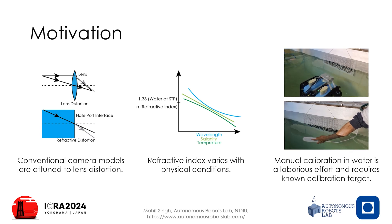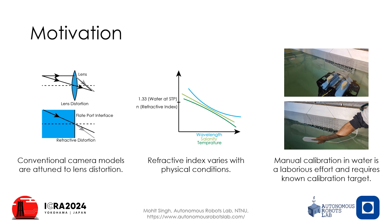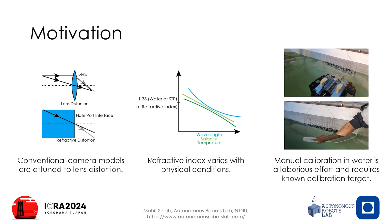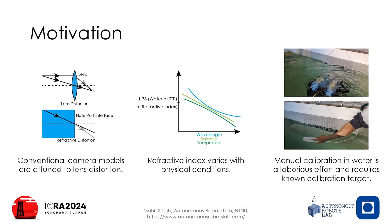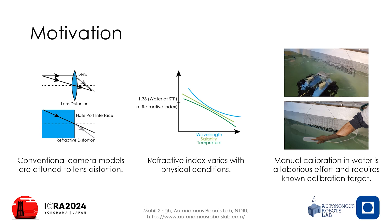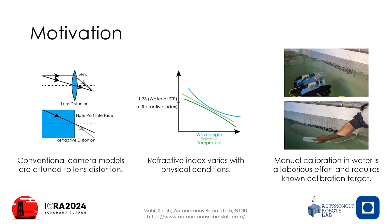Further, due to the variations in physical conditions, the refractive index can vary, thus rendering a constant mapping erroneous. Lastly, calibration of underwater systems is a laborious task and needs specialized equipment.